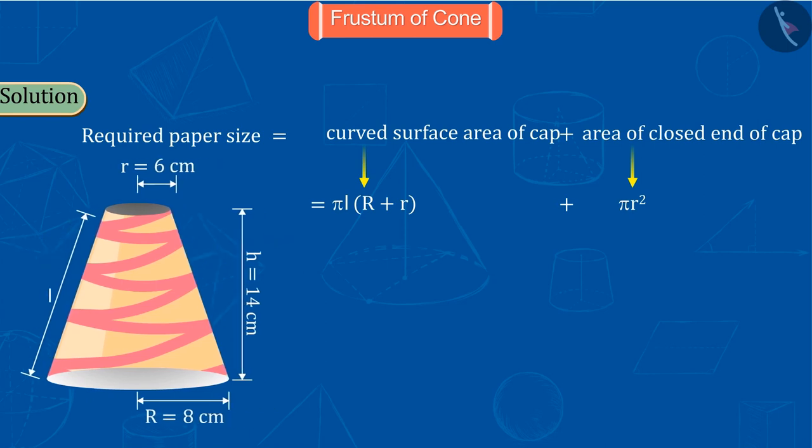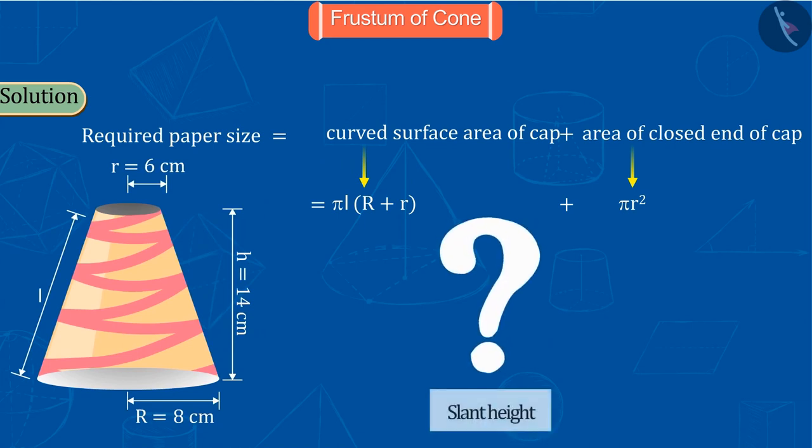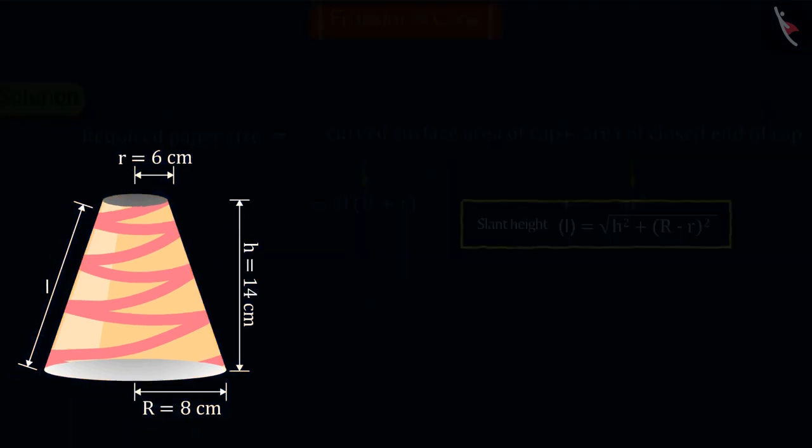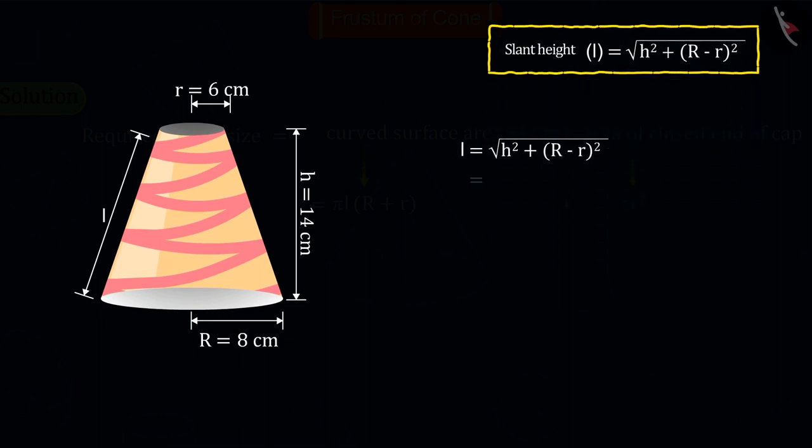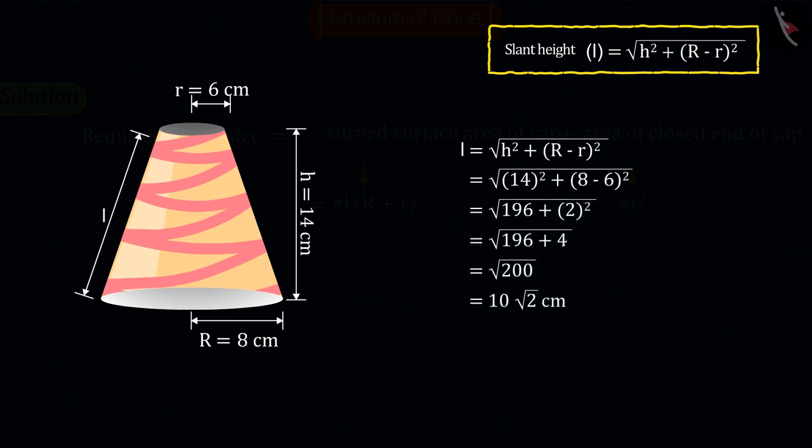Now how can you find the slant height? Well done, we can find the value of the slant height from this formula. Replacing all values, on solving we get the value of l, that is slant height 10 root 2 centimeters.